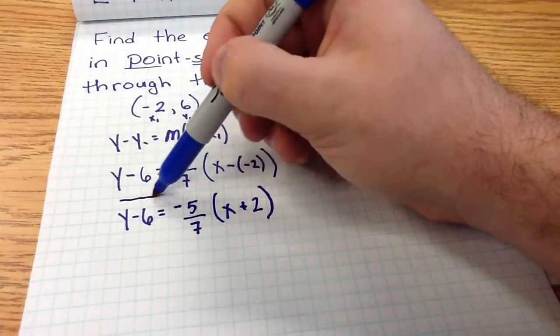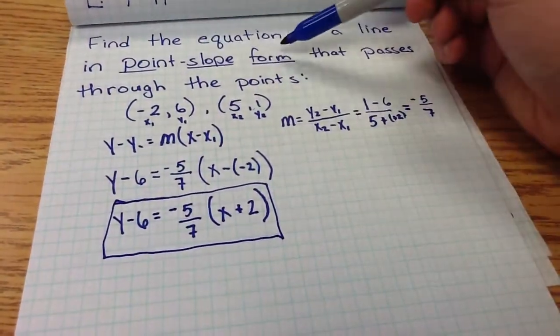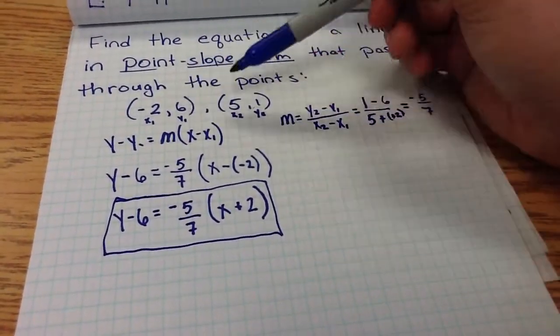But this is our answer. We are finished at this point. We've given you the equation of a line in point-slope form that passes through these two points.